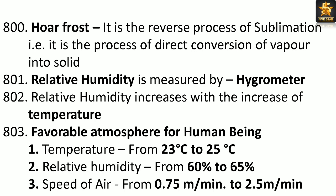Relative humidity is measured by a hygrometer. Relative humidity increases with the increase of temperature. Favorable atmosphere for human beings: temperature from 23°C to 25°C, relative humidity from 60% to 65%, and speed of air from 0.75 meters per minute to 2.5 meters per minute.